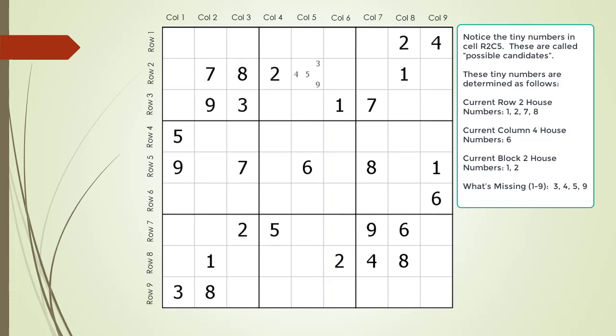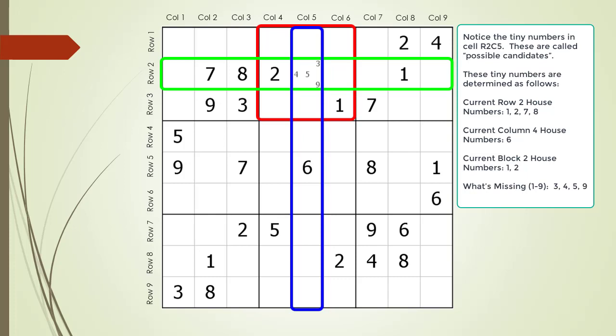Notice the tiny numbers in cell row 2, column 5 — these are called possible candidates. The tiny numbers showing up in the cell are the numbers the cell could possibly be. The possible candidates are determined by the contents of the three houses shared by cell 2,5. The current row 2 house numbers are 1, 2, 7, and 8; the column 4 house number is 6; and the block 2 house numbers are 1 and 2. From all the numbers 1 through 9, the missing numbers 3, 4, 5, and 9 are the possible candidates for cell 2,5.